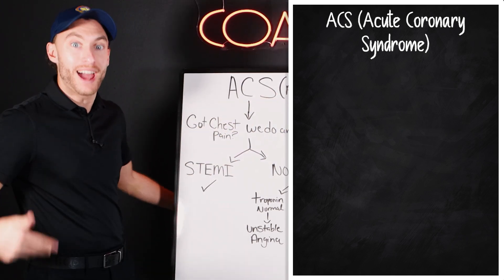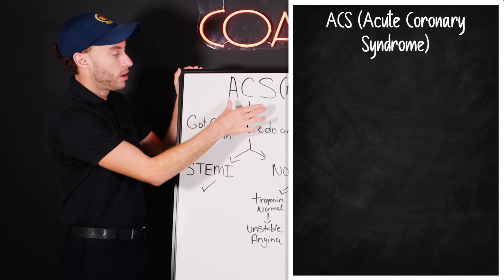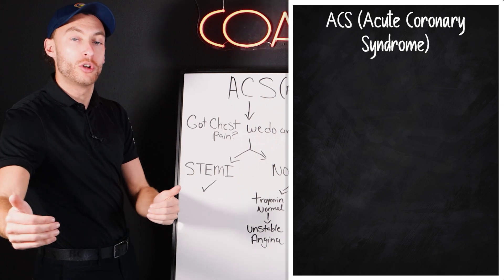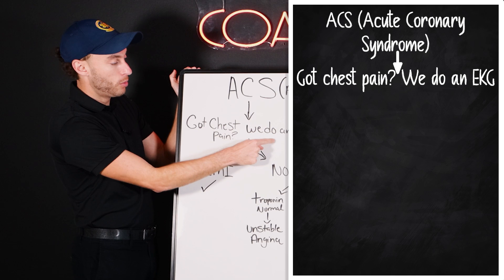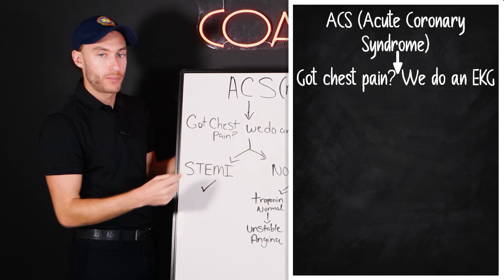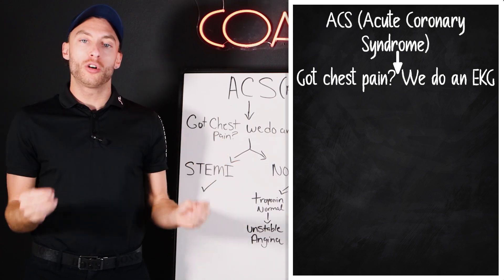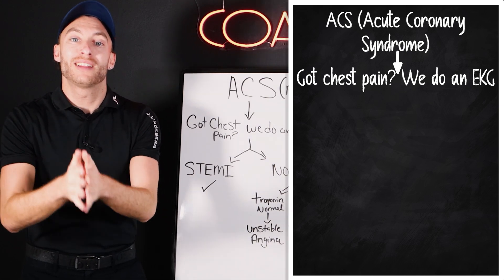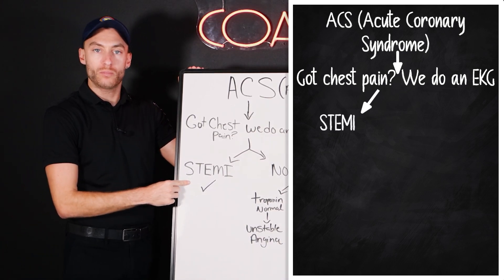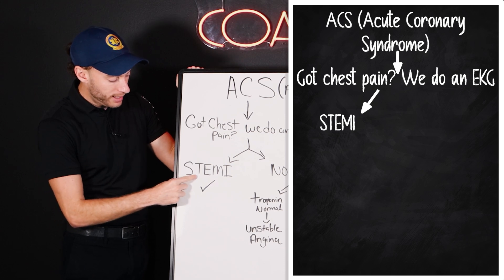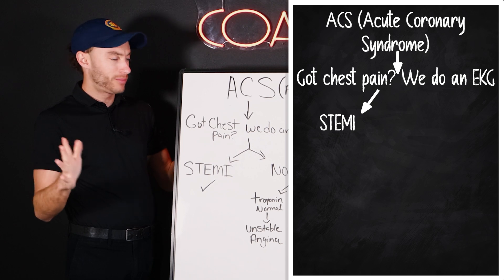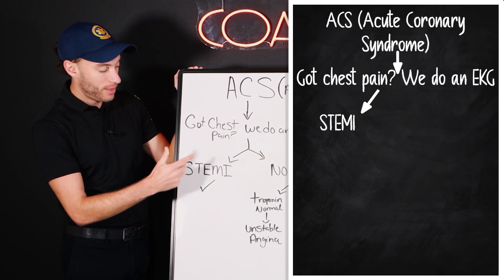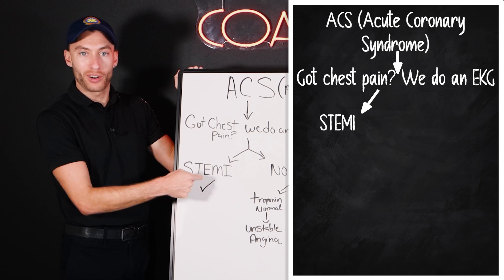If someone in the ambulance has chest pain and we think they're having an acute coronary syndrome, we do an EKG. As paramedics, you're able to read that EKG and determine if they're having a heart attack. If we see a heart attack on the EKG, we call it a STEMI — ST elevation myocardial infarction. The ST segment is elevated in a way that shows a heart attack on the EKG.